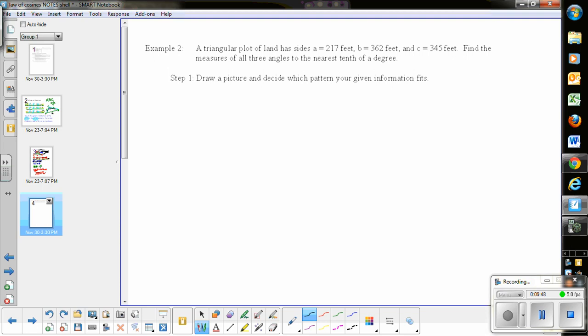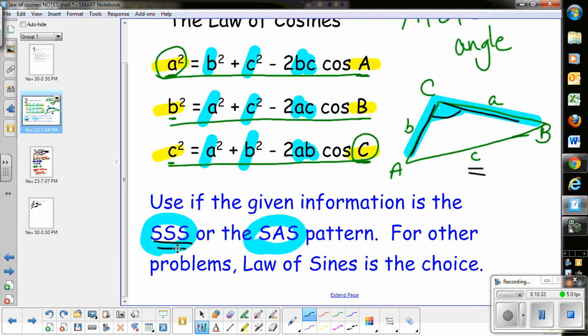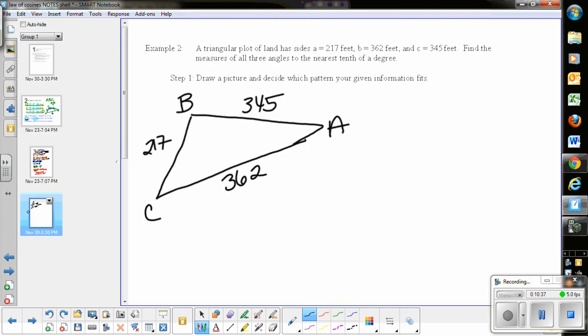Here is the second and final example. We're looking at a plot of land with given dimensions. The longest side is 362, which is side b. So this would be angle B up here. If this is C, this side would be 345. If this is angle A, this side would be 272. In this situation, we're given side-side-side. If you recall, we talked about at the very beginning that side-side-side given information is one of the things that causes us to use Law of Cosines.